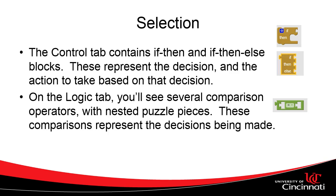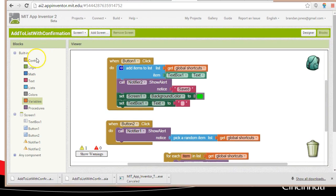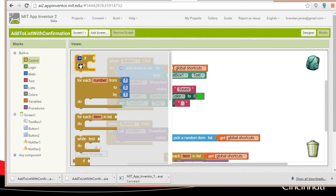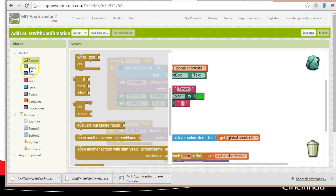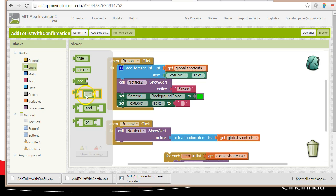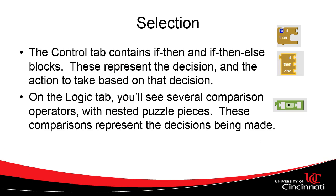How do we do this with App Inventor? We're going to use the Control tab and the Logic tab. The Control tab has If-Then and If-Then-Else. An If-Then example: if it's Monday, Tuesday, Wednesday, Thursday, or Friday, then go to work. Otherwise, we just don't go to work. So that's a good example of If-Then — if it is these days, we go to work; otherwise, we simply don't go to work.